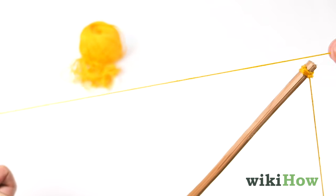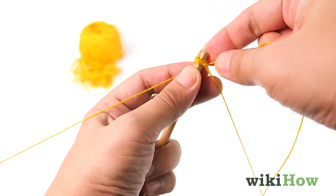Pull the string so it's taut, then tie the two ends into a knot.